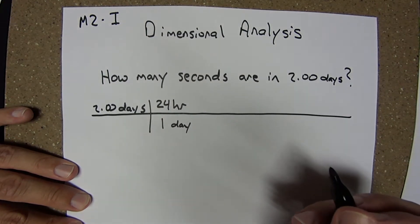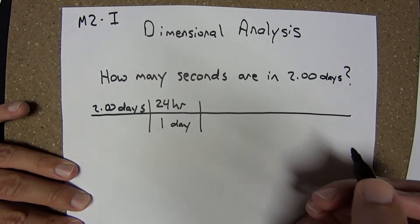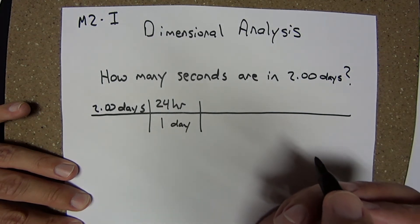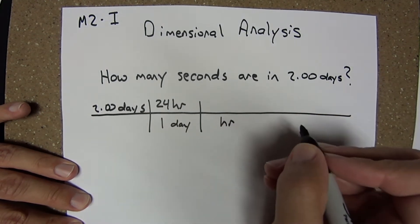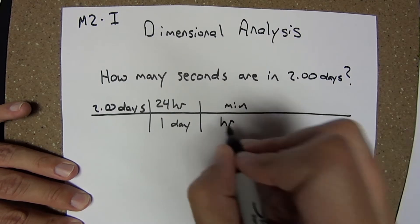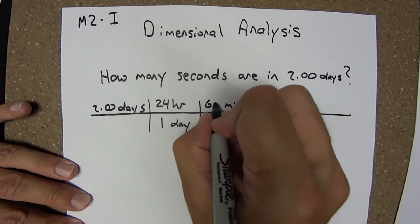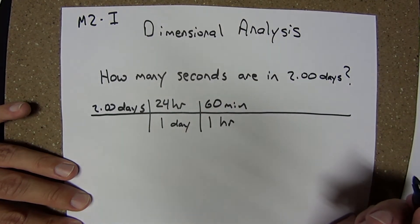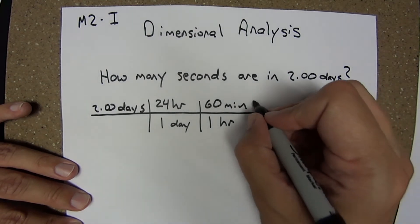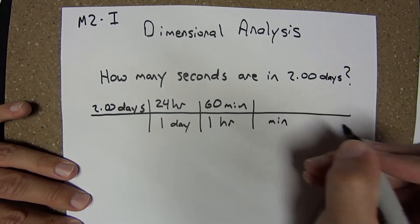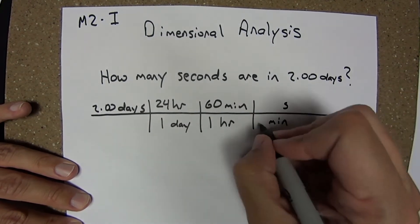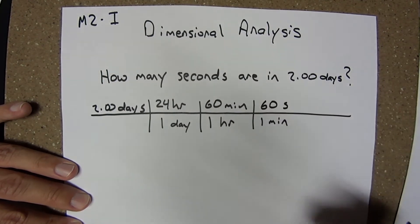I'm going to use units to guide me. I'm at hours, from hours I can conveniently go to minutes. I know that one hour is equivalent to 60 minutes. I'm one step away from minutes. I know that I can go to seconds. One minute is 60 seconds.